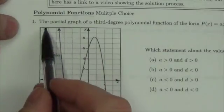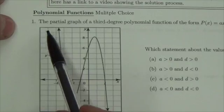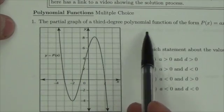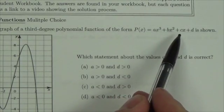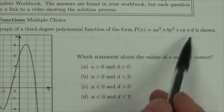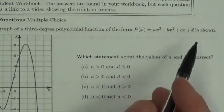We're taking a look at this partial graph. The question shows the partial graph of a third-degree polynomial function in the form P(x) = ax³ + bx² + cx + d, the general form with all the parameters.